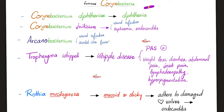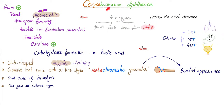Corynebacterium diphtheriae has four biotypes: gravis, belfanti, intermedius, and mitis. The mighty mitis is the one that causes the most human diseases. Corynebacterium diphtheriae is club-shaped, irregular staining, irregular-shaped, variable-shaped, and pleomorphic — everything is changing. It has granules that stain with aniline dyes, known as metachromatic granules.